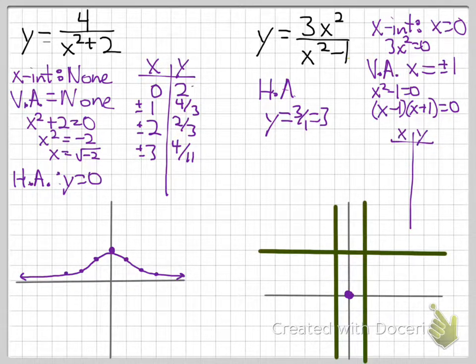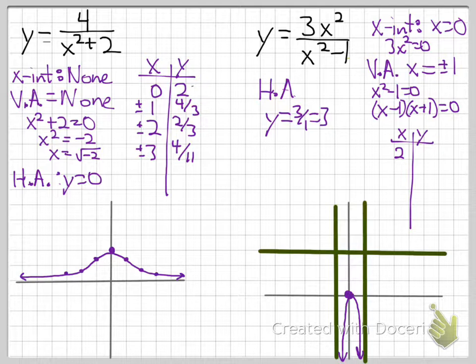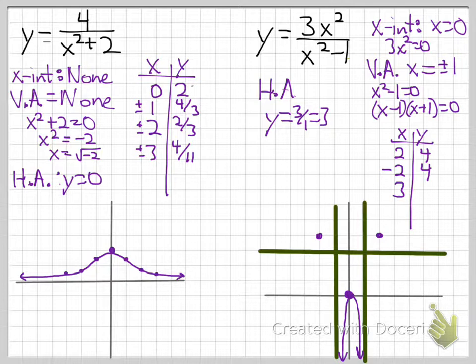We need to see what's going on between 0 and 1. Looking on the outside first: when x equals 2, we get (3 times 4) over (4 minus 1), which is 12 over 3, or 4. When x equals negative 2, the result is also 4. When x equals 3, we get (3 times 9) over (9 minus 1), which is 27 over 8, about 3.375. Negative 3 gives the same result.